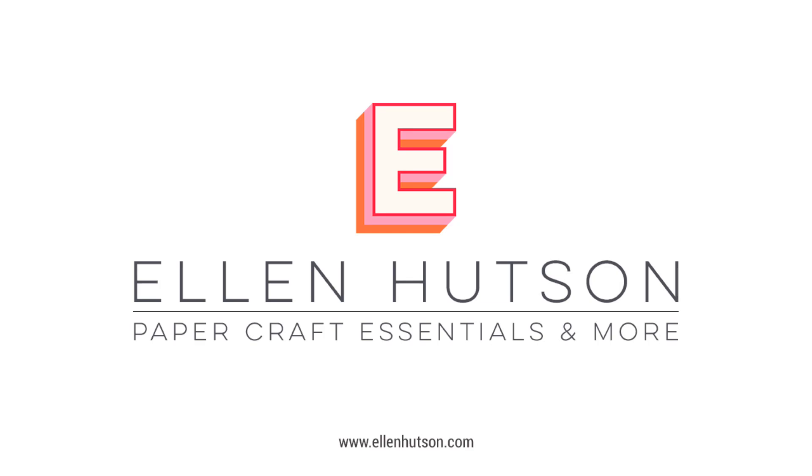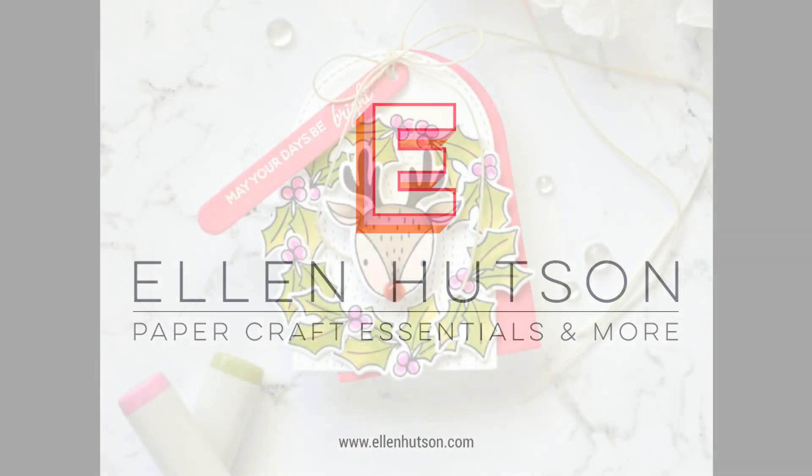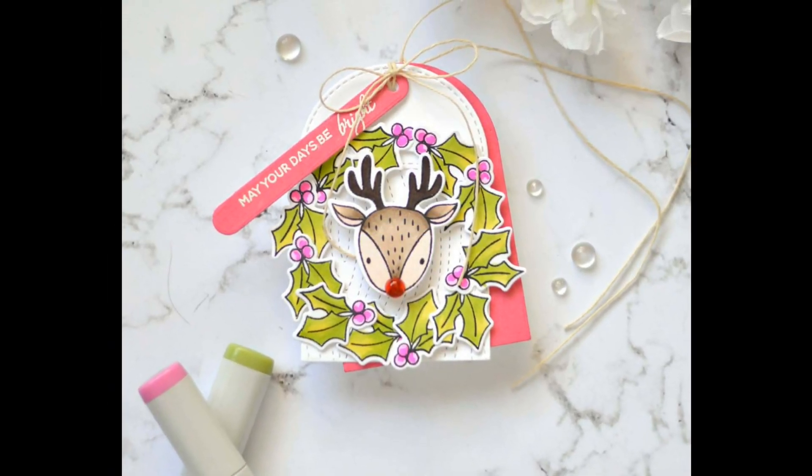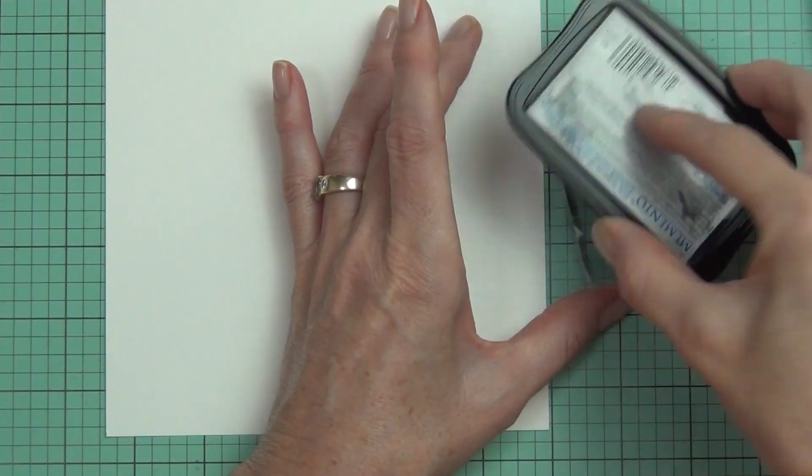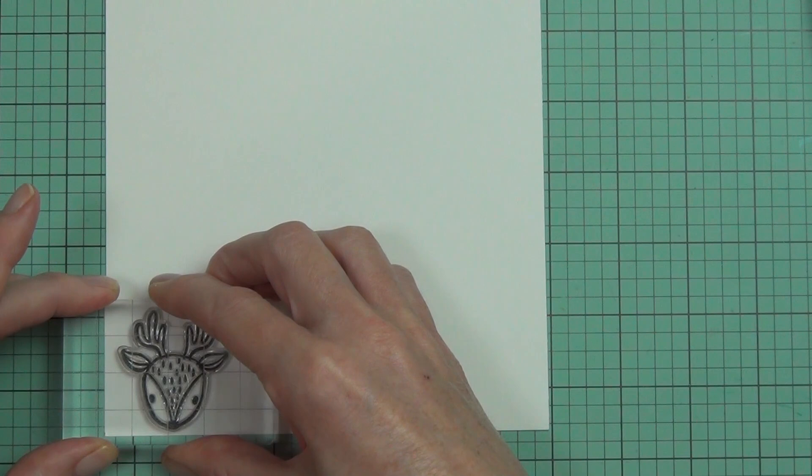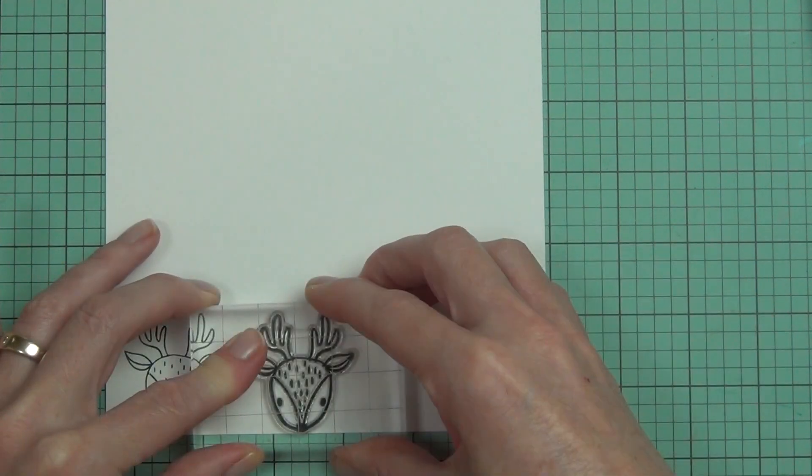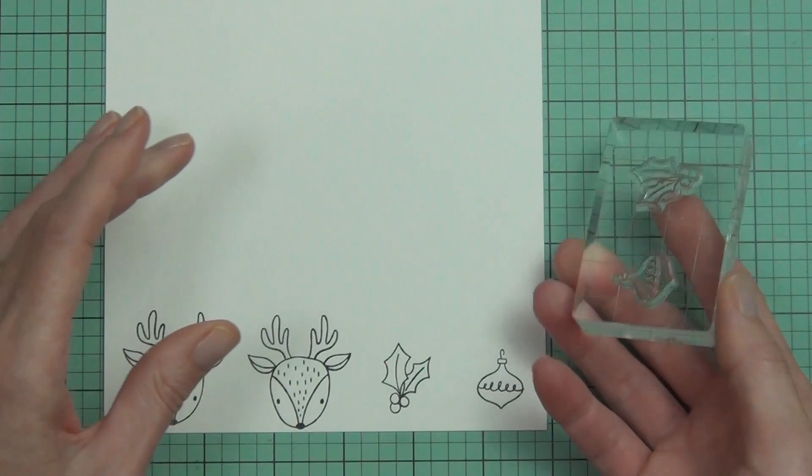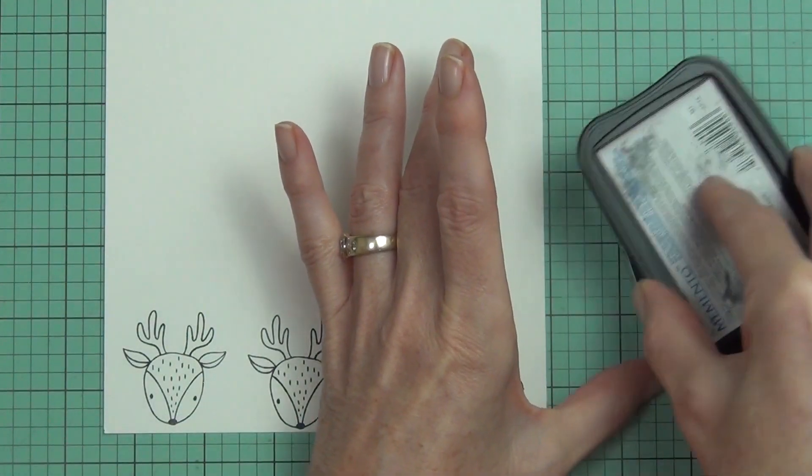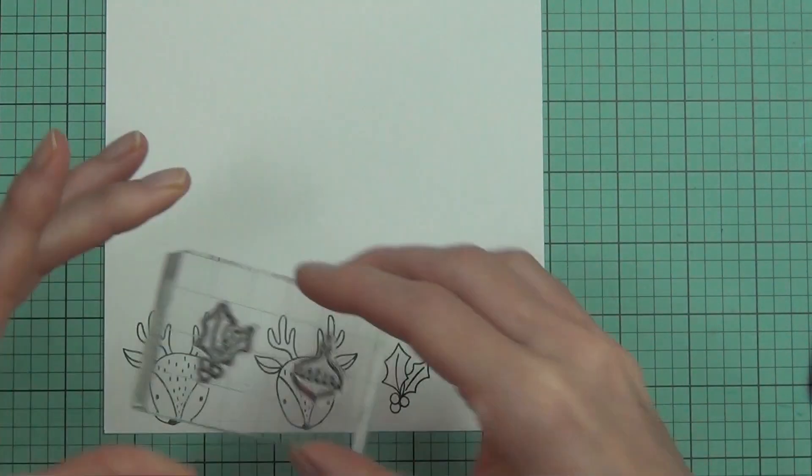Hi there, it's Therese and I'm here for ellenhutson.com. Welcome to the 12 Tags of Christmas. I'm using the Holiday Characters stamp set to create my holiday tag today, and I'm starting by stamping out quite a few of the images. I'm using tuxedo black ink and some Neenah 80-pound cardstock because I'm going to be doing some Copic coloring.